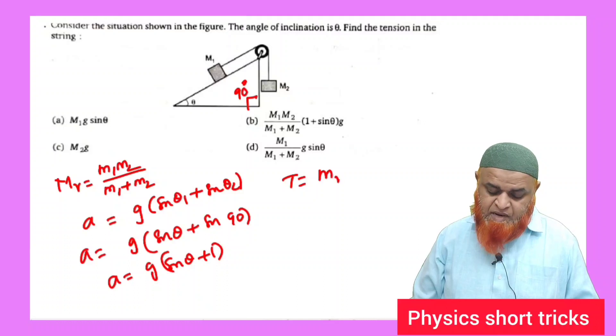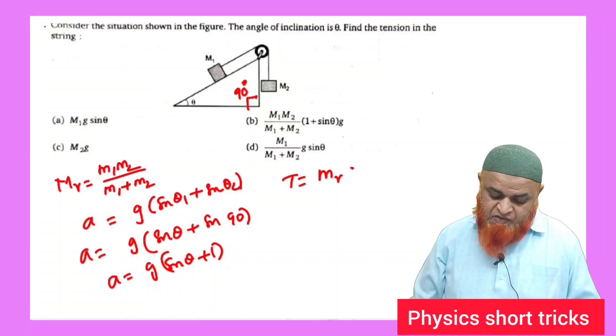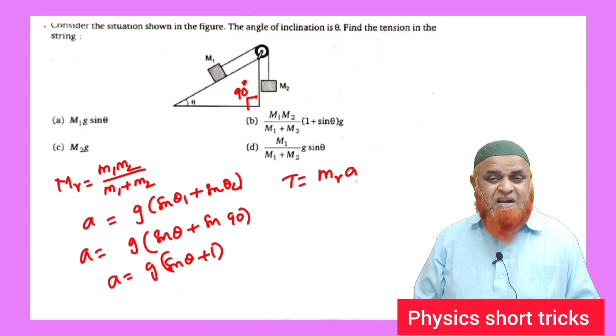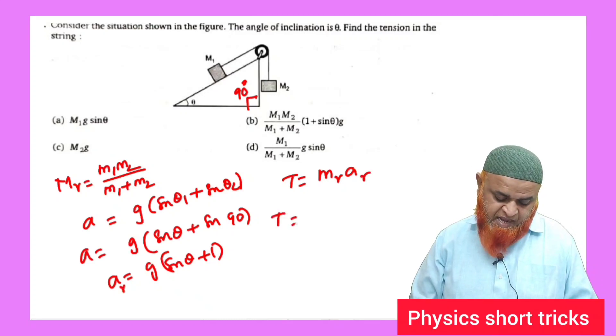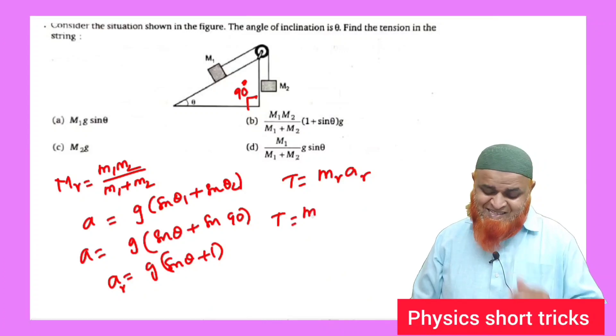Can you write now what is the tension here? Tension is nothing but the product of reduced mass times acceleration, which is said to be the resultant acceleration. So this is the resultant acceleration.